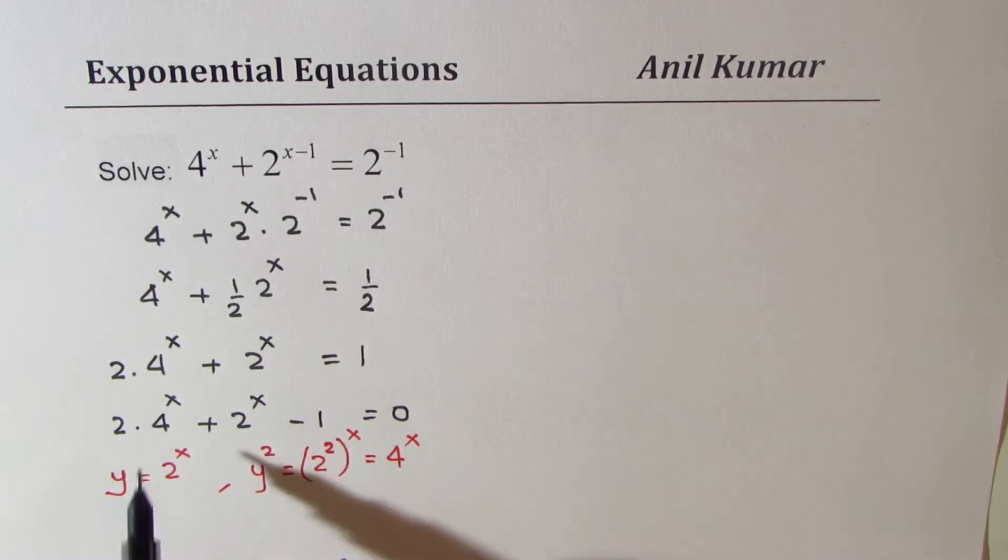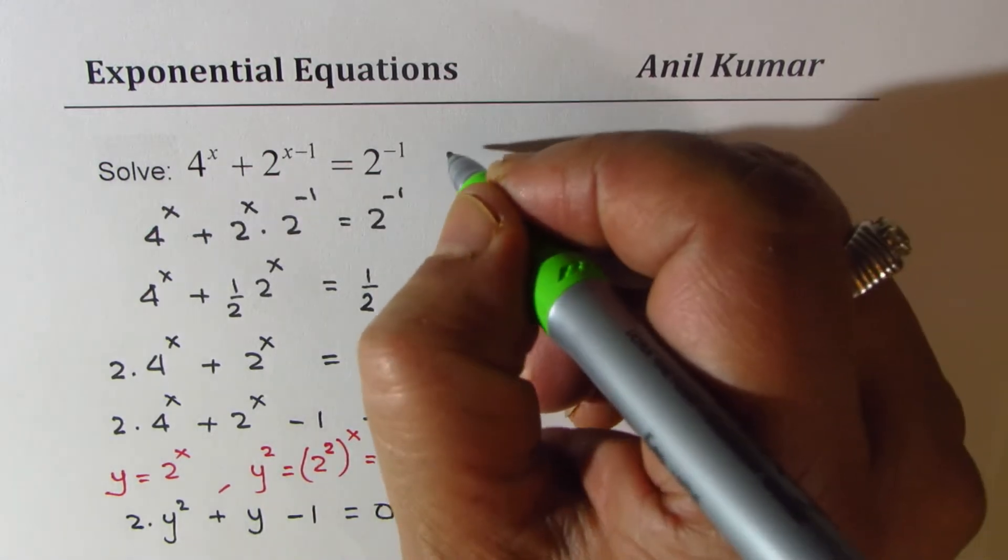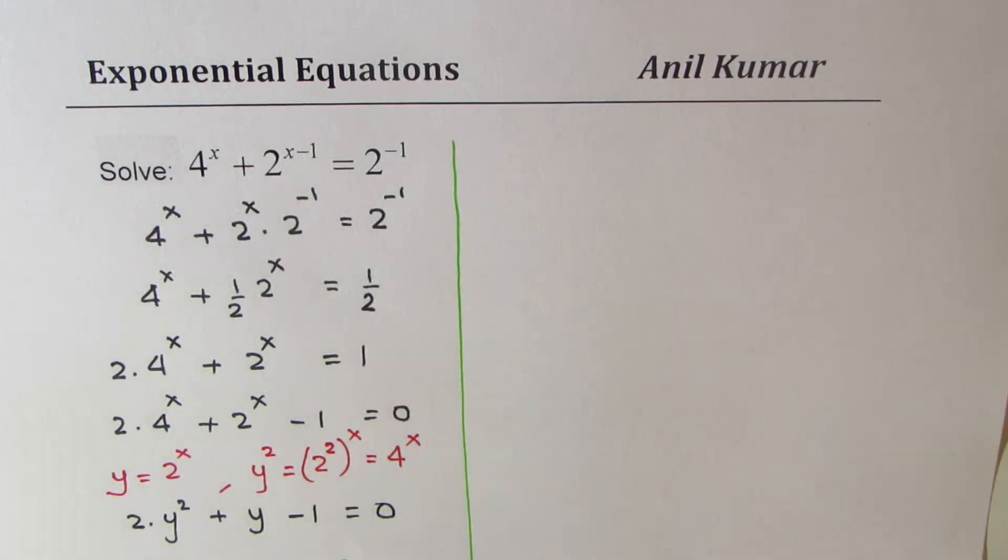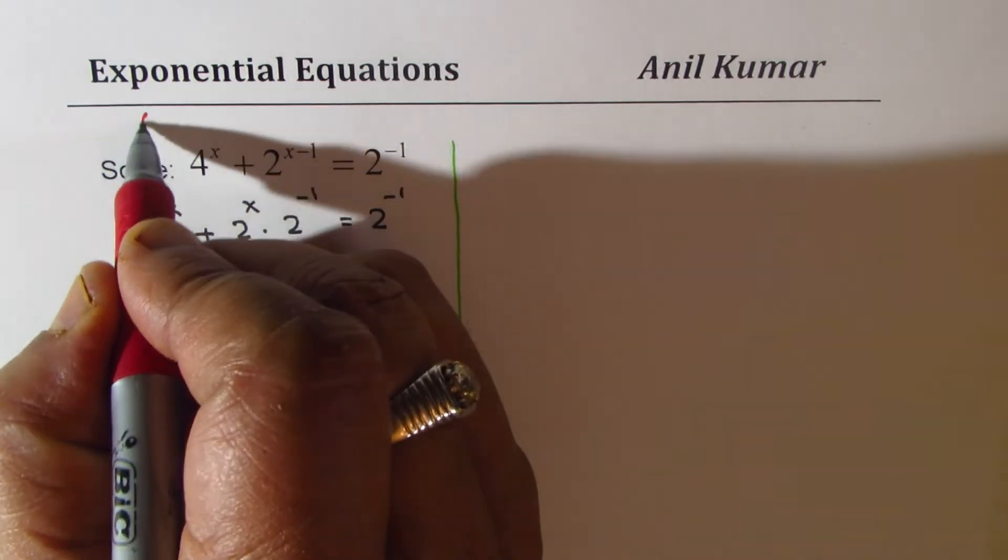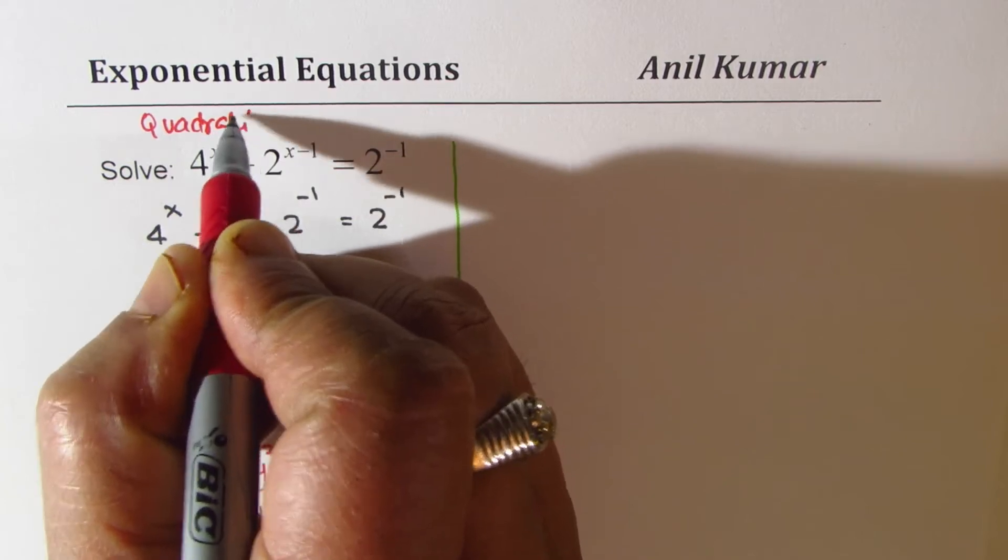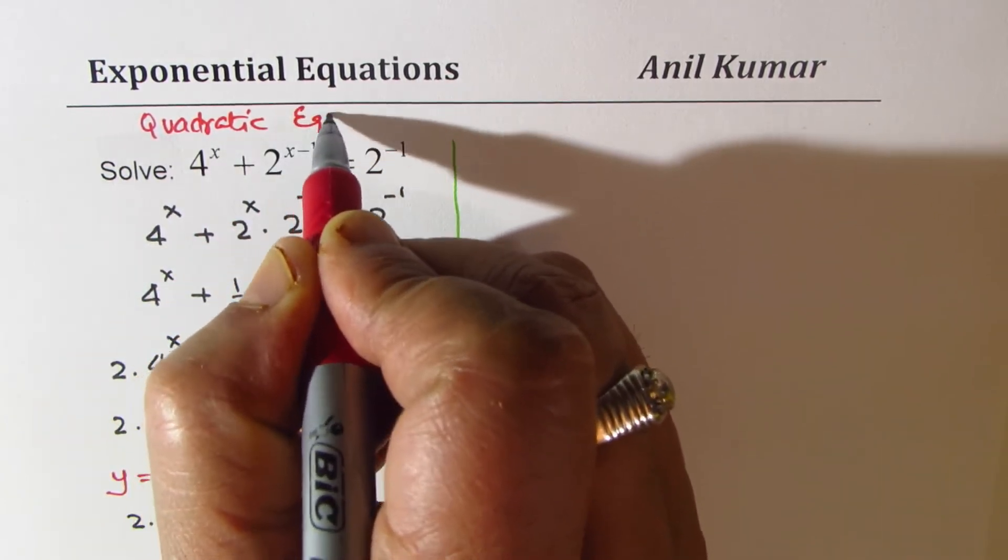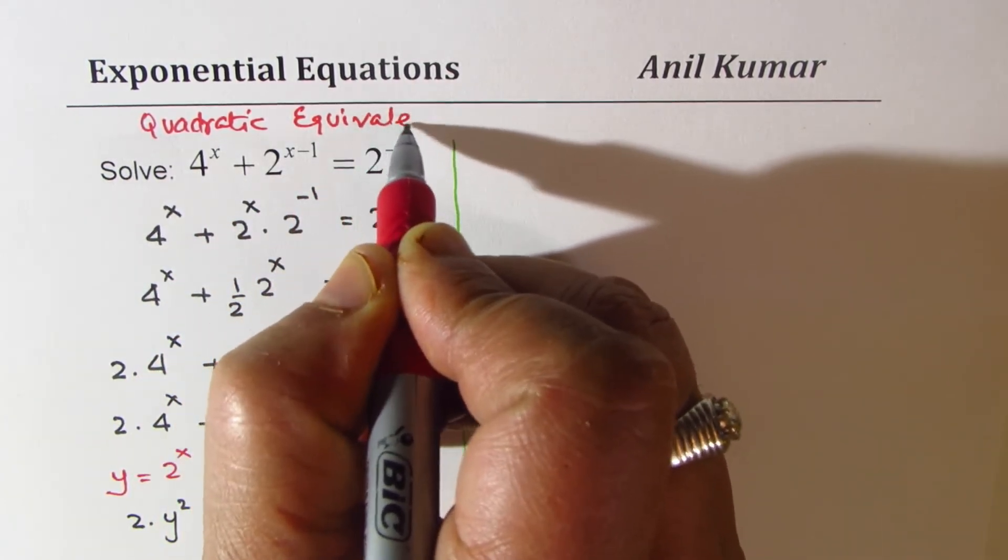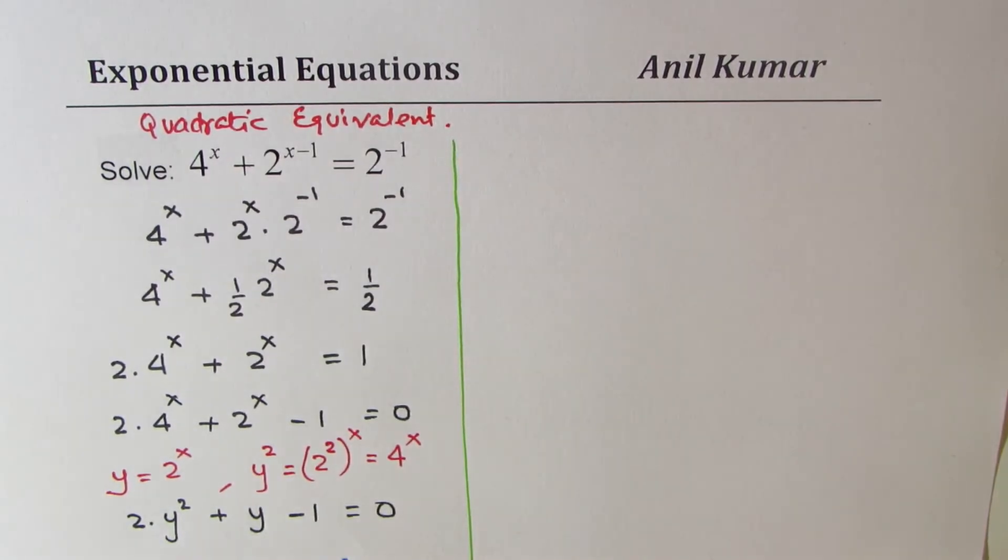So we will make this substitution and write this as 2 times 4 to the power of x becomes y square, plus y minus 1 equals 0. So now, we get a quadratic equation. That is the first step. The first step which you learn is to rewrite as quadratic equation.